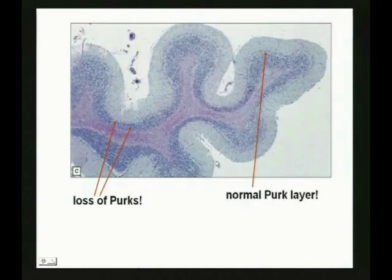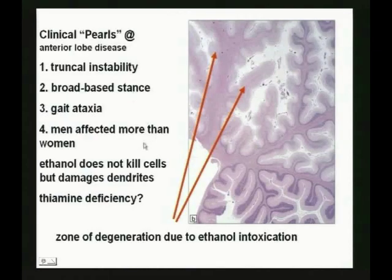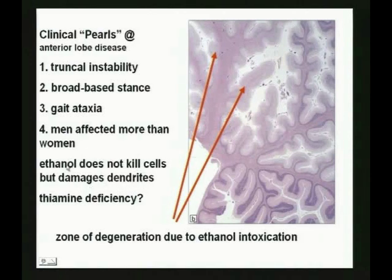Looking at histology: here's the molecular layer, the Purkinje cell layer, and the granule cell layer. The normal area looks good; in the affected area the molecular layer is shrunken and you don't see good Purkinje cells. The classic anterior lobe findings — and you'll see this on national boards and the final exam — are truncal instability, broad-based stance with legs far apart, and gait ataxia. Men are affected more than women. The ethanol doesn't really kill the cells but damages their dendrites, and there may also be a thiamine deficiency component.